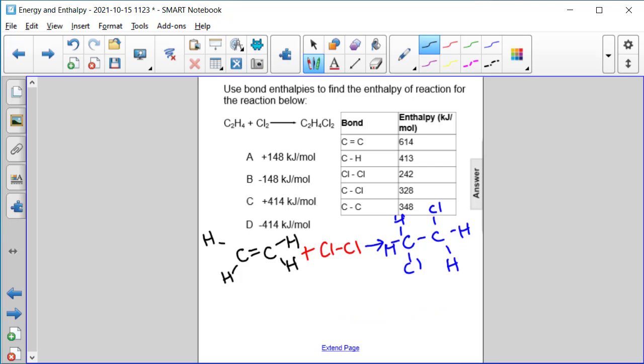So this is a little tricky because now we have bonds that are the same on both sides. So here we have four carbon-hydrogen single bonds and one carbon-carbon double bond. And we have one chlorine-chlorine single bond. So those are our reactants.